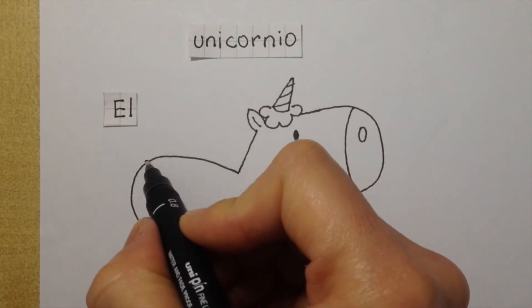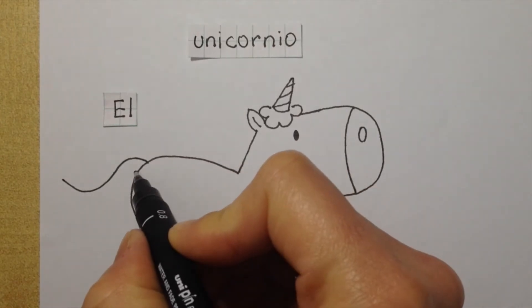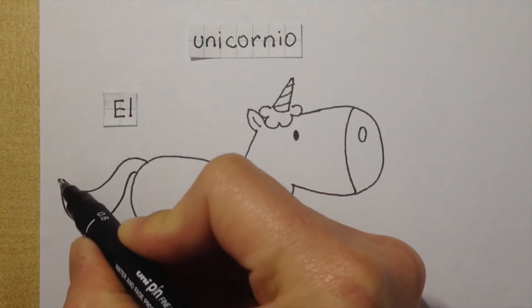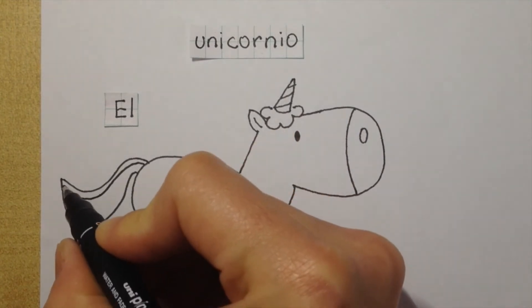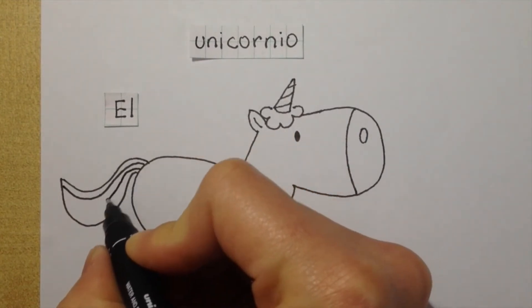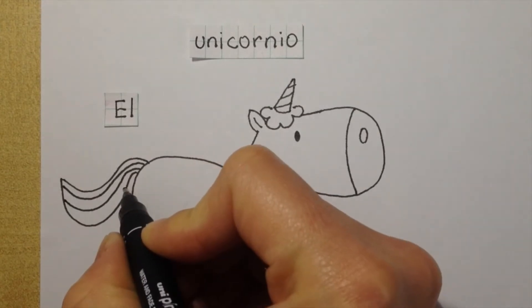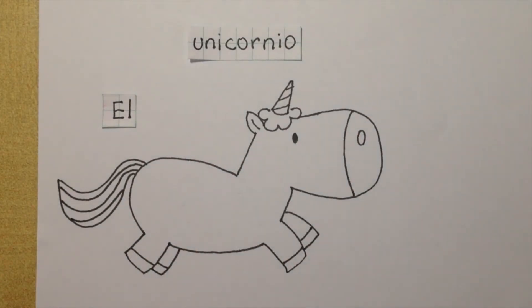Now the tail, big and floppy, and we divide it with some lines that later we can paint with the rainbow colors.